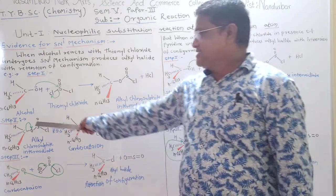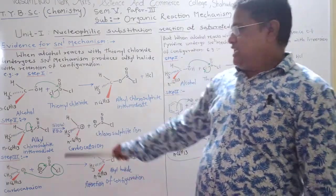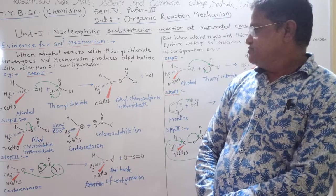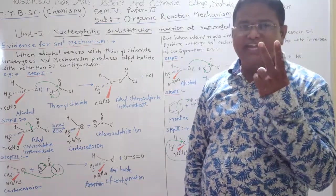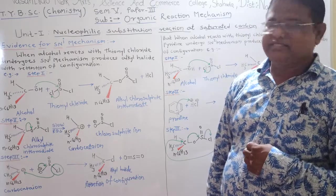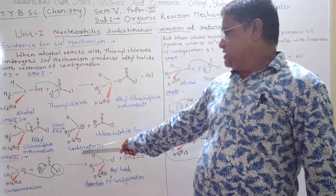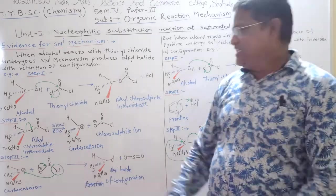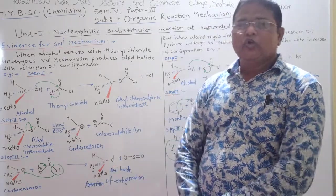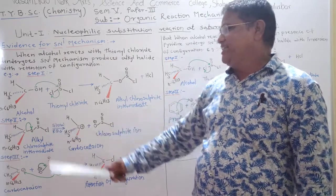In second step, alkyl chlorosulphite intermediate dissociates slowly to form two intimate ion pairs. That is carbocation and chlorosulphite ion. It is a slow step called as rate-determining step.